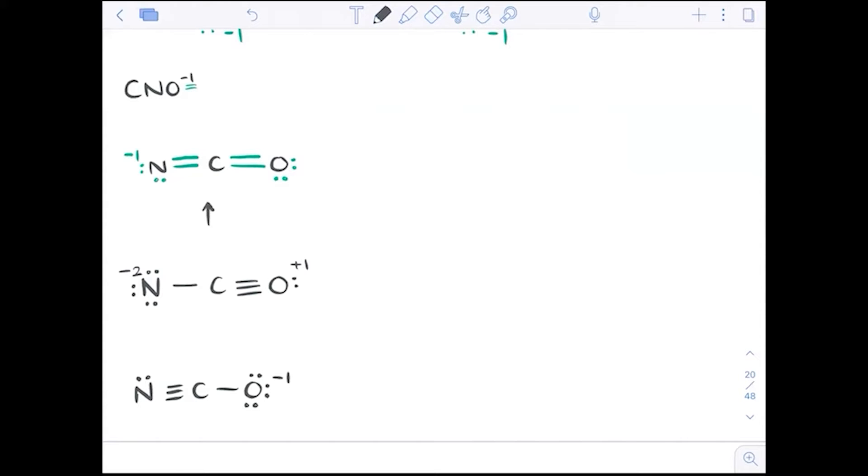Here are three resonance structures that are quite different from each other. So now, which one's the best? Well, we want the one with the fewest formal charges. That's the first rule that we would look for. And that crosses this one off the list. Because of the minus two and the plus one, we know that one's not a good resonance structure.